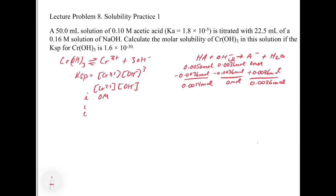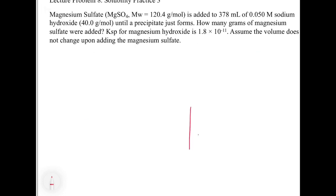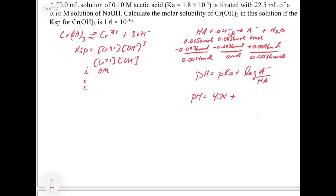We have both A⁻ and HA in solution, so we have a buffer. We go to the Henderson-Hasselbalch equation: pH = pKa + log([A⁻]/[HA]). The pKa is 4.74 (negative log of Ka). Since both species are in the same solution volume, it divides out, so we plug in moles directly: log(0.0036 / 0.0014).